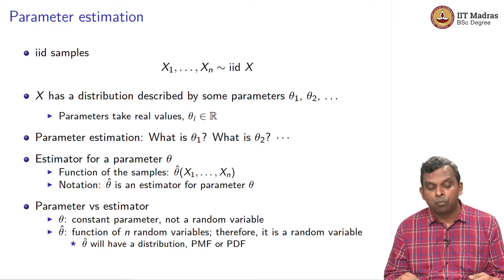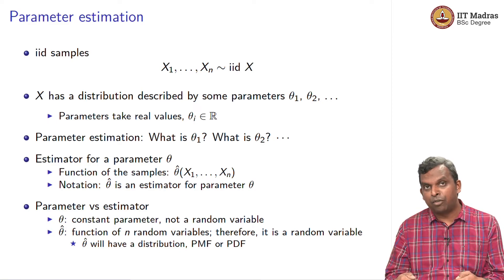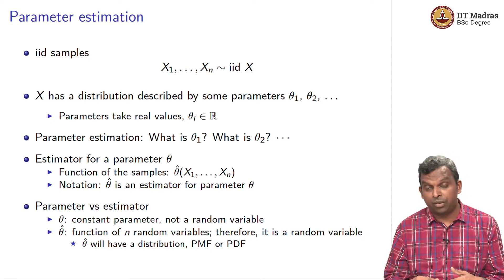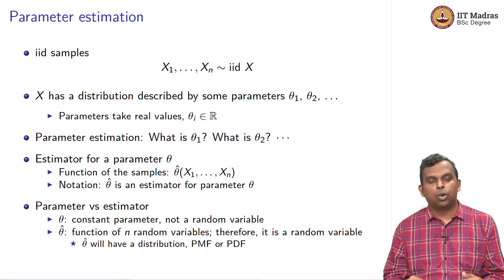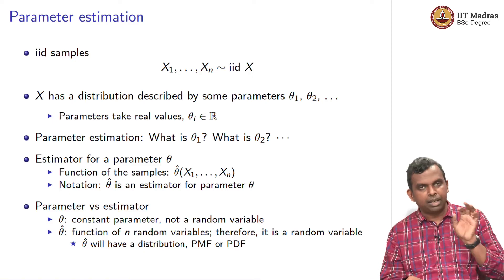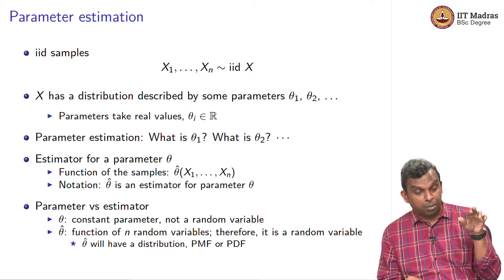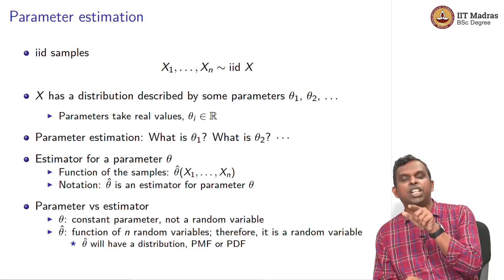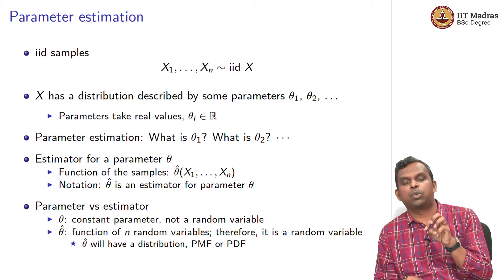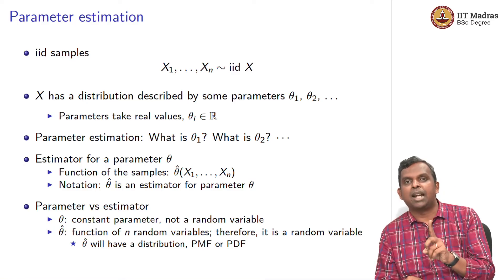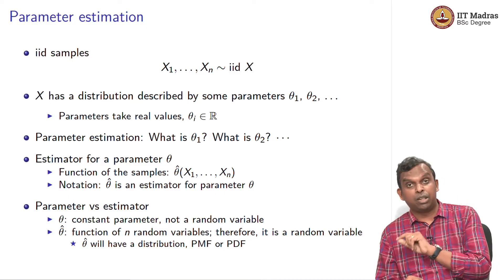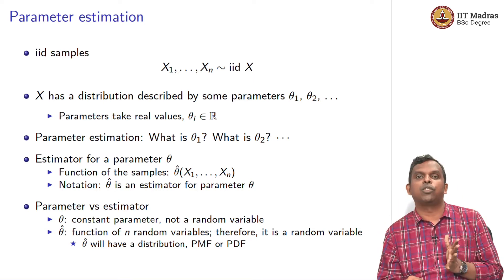Theta hat is a function of n random variables, and therefore it is a random variable. It will have a distribution — it will have a PMF or PDF. In one sampling, theta hat gives you one value; another sampling gives you some other value; another sampling gives yet another. Because depending on the actual realization of the samples, the function theta hat will change. So x1 through xn are random variables, therefore theta hat of x1 to xn is also a random variable. Depending on the actual samples, it takes different values with different probabilities, which means it has a distribution of its own.